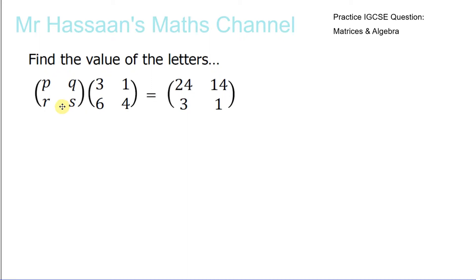There's one method I showed in my presentation of how to use simultaneous equations to solve this, where you set up basically two sets of simultaneous equations: 3P plus 6Q equals 24, and P plus 4Q equals 14. And you do the same for R and S: 3R plus 6S equals 3, and R plus 4S equals 1. Then you solve those pairs of simultaneous equations.